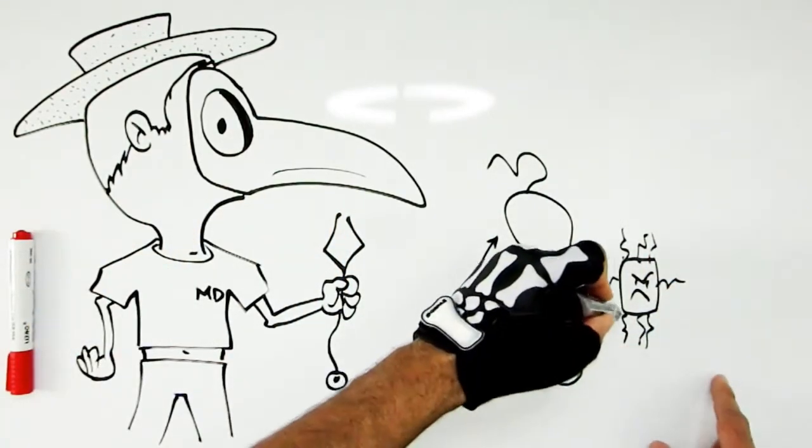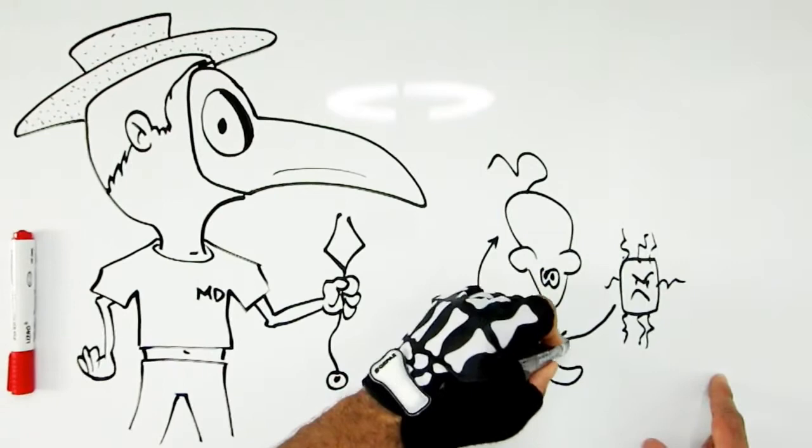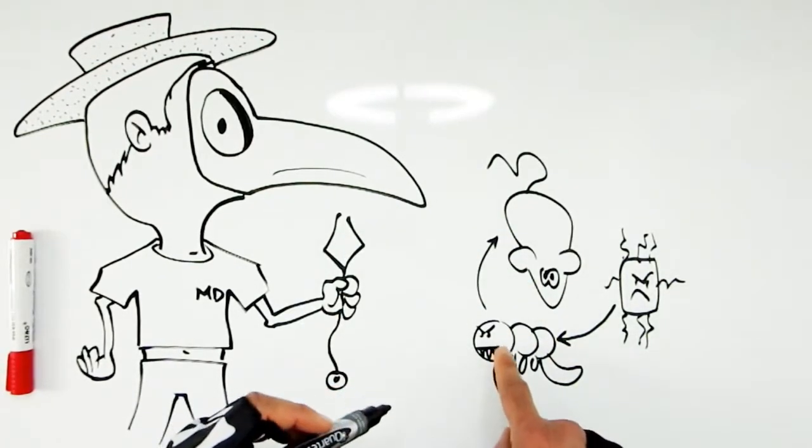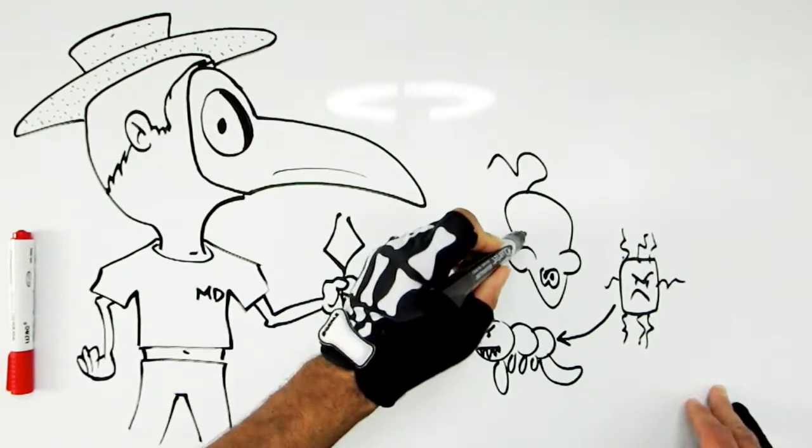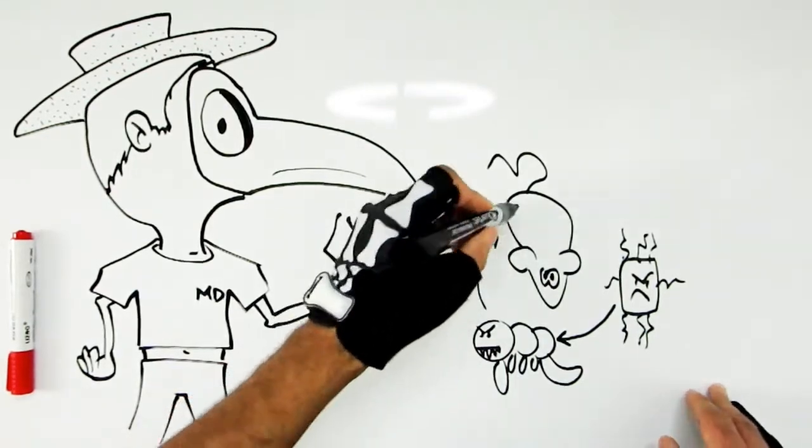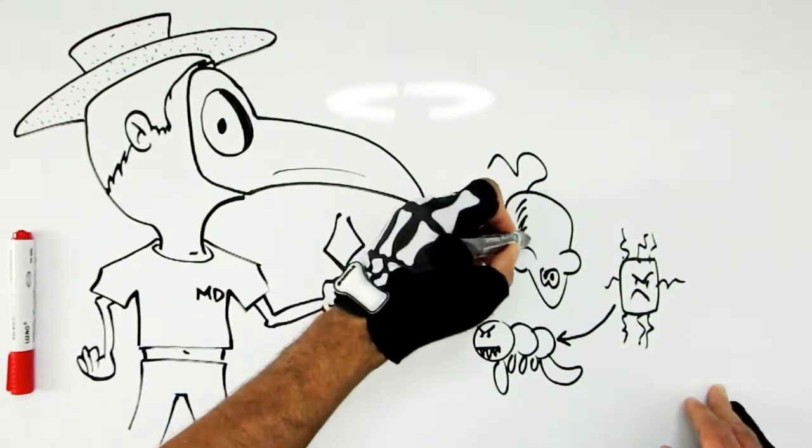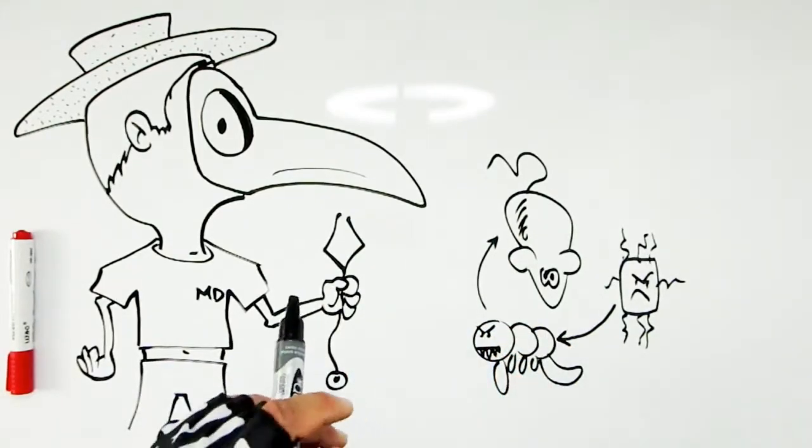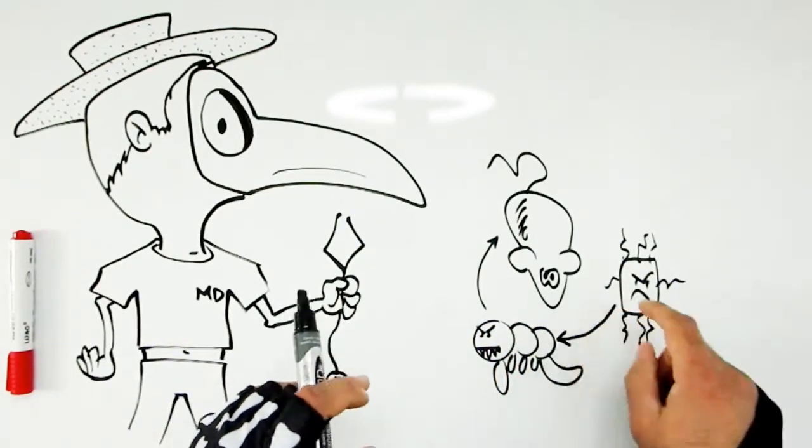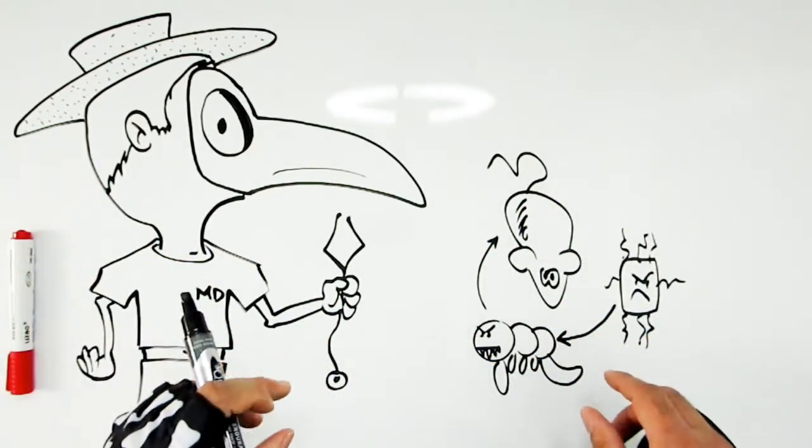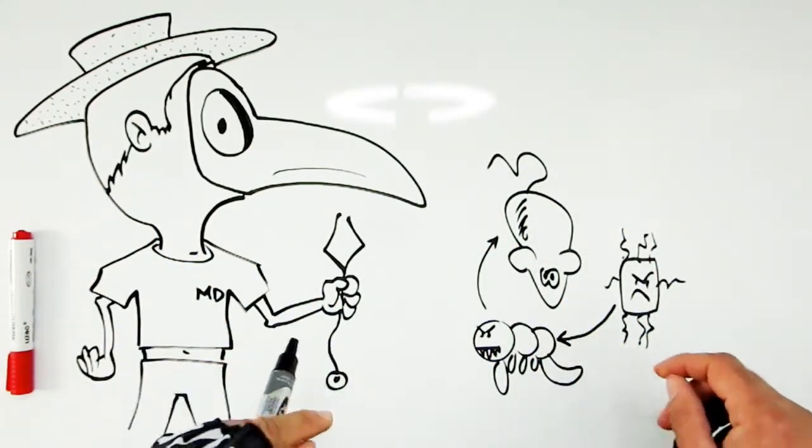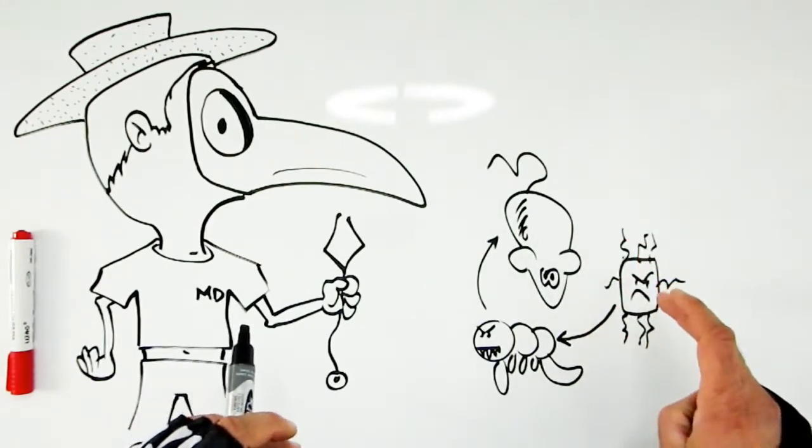So how it works is that the Yersinia pestis has part of its life cycle that involves the gut of the lowly flea. The lowly flea then hitches a ride on the very mobile rodent population which was quite rampant in most cities at that time and especially Europe with poor sanitation and a bunch of other public health problems.